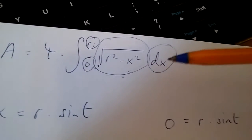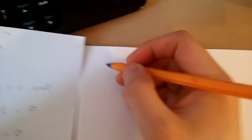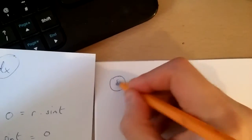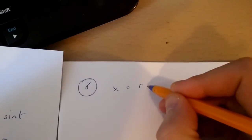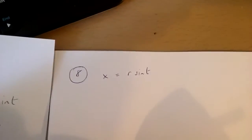Now, I need to transform dx. So, I'm going to write over here, x is equal to r times sine t.